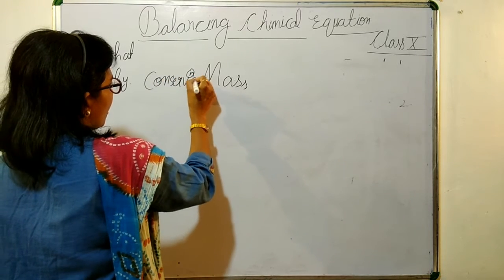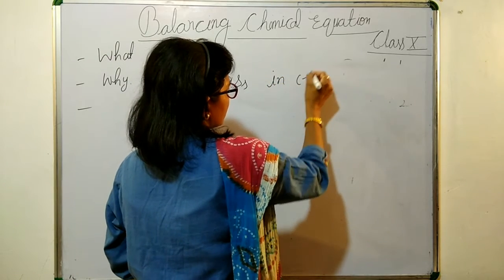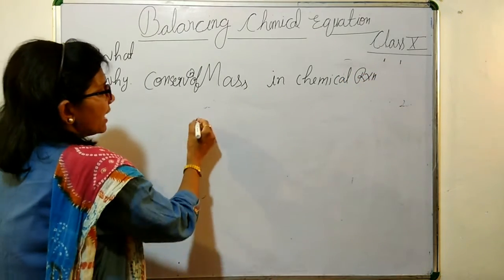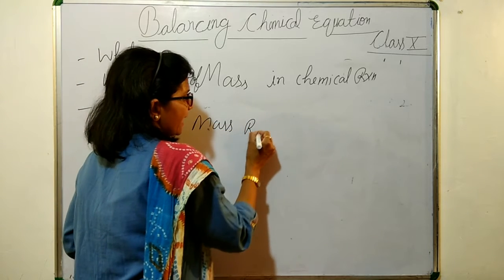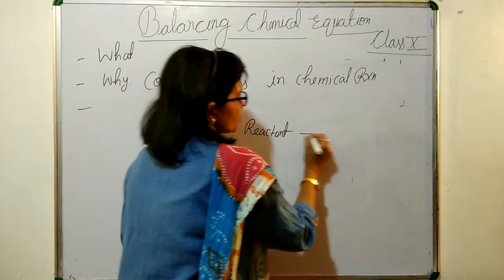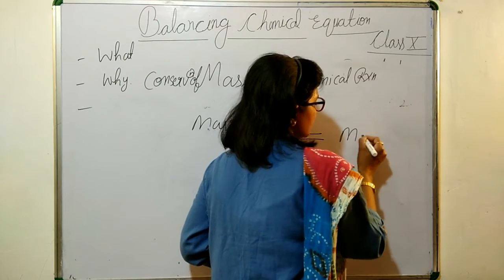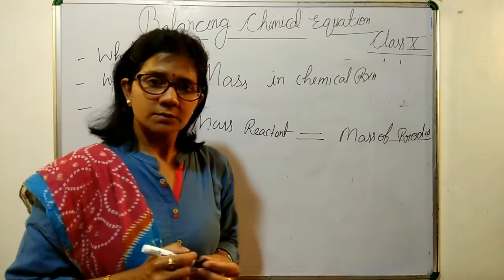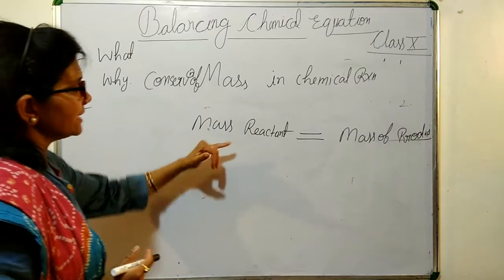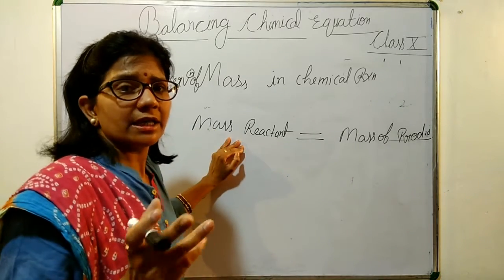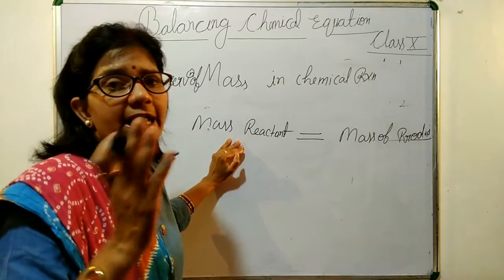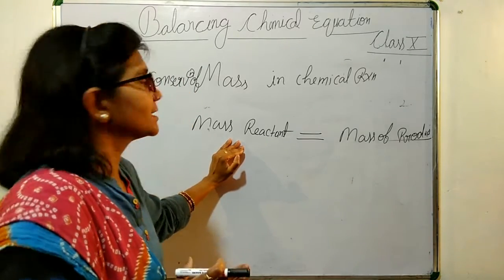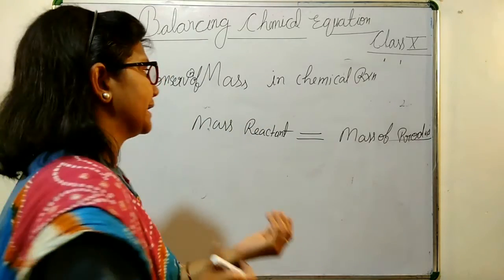Conservation of mass in any chemical reaction states that the mass of the reactants should be equal to the mass of the products. In any chemical reaction, mass is obtained because of atoms and their atomic weight. So we are supposed to balance every equation so that it follows conservation of mass.